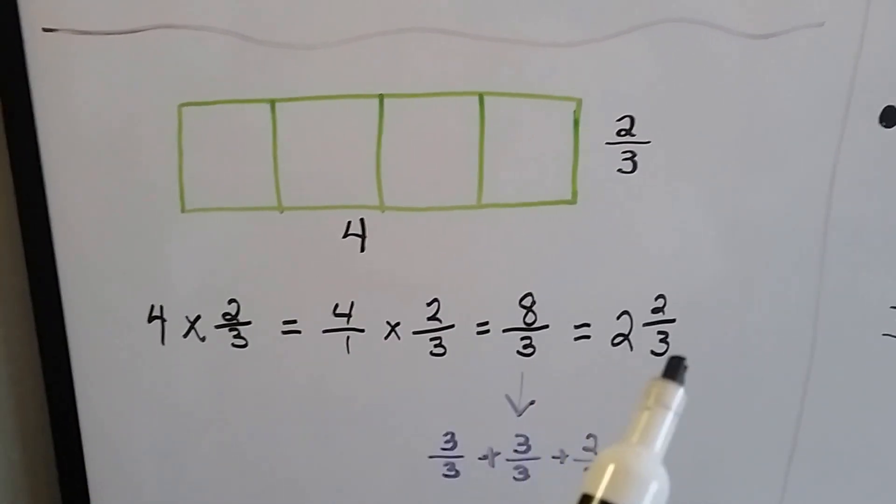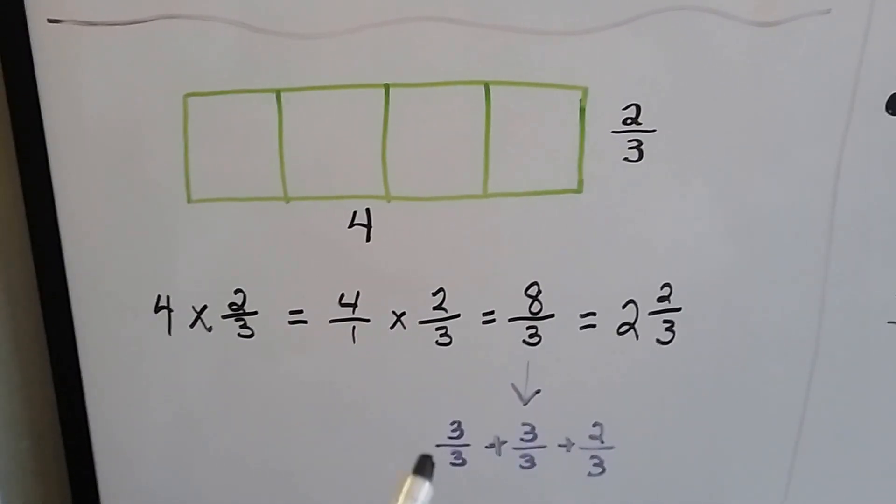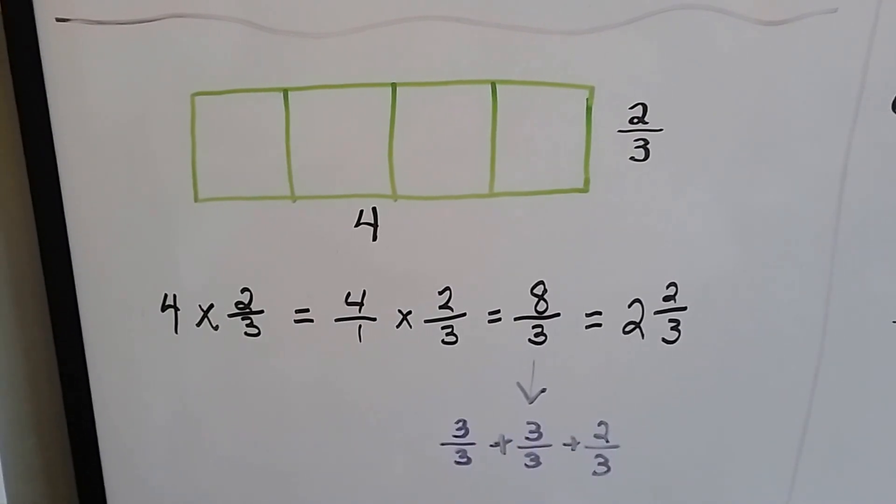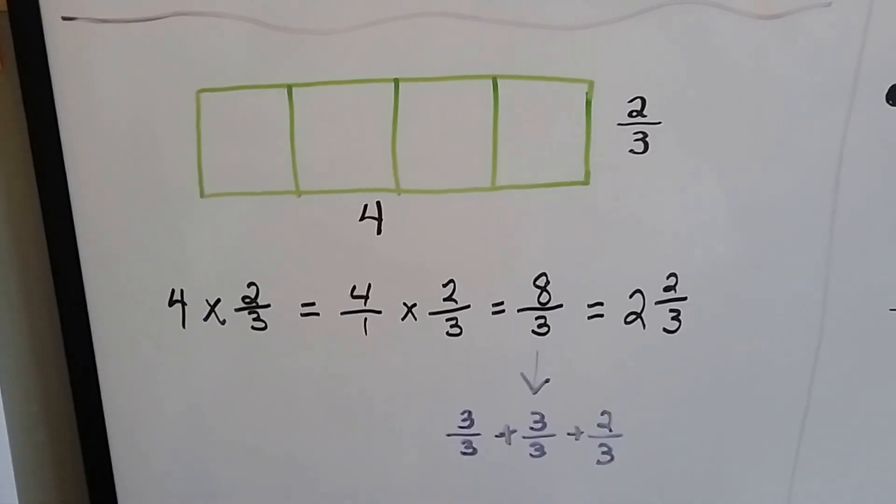1 times 3 is 3. That gives us 2 and 2 thirds when we simplify it. That's 3 thirds plus 3 thirds plus 2 thirds. So the 8 thirds is 2 and 2 thirds.